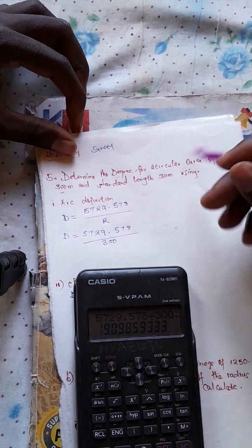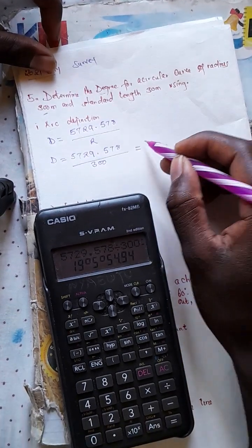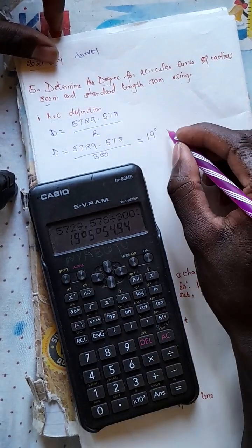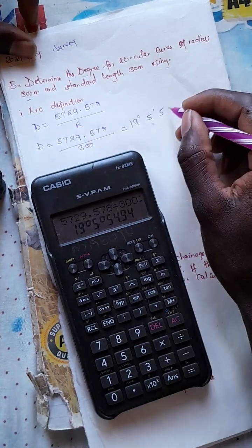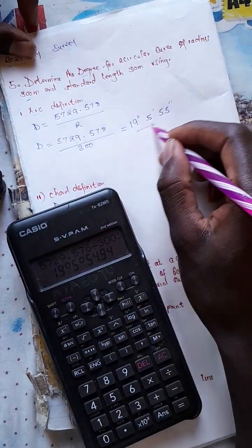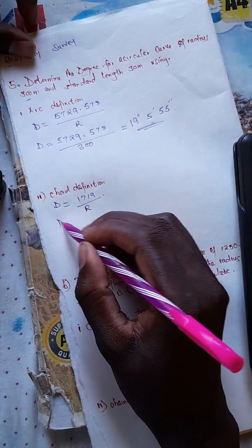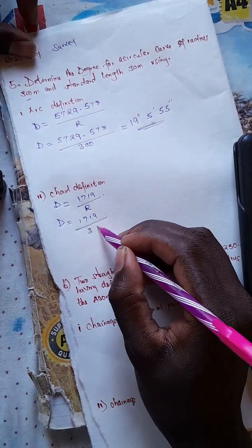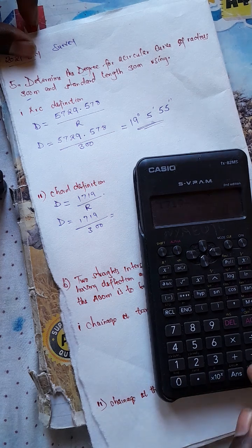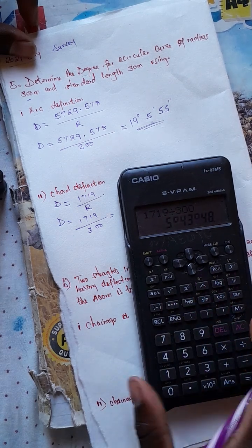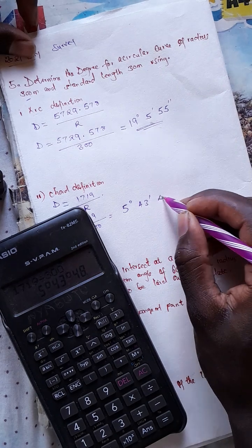The answer must be in degrees. By arc definition, we get 19 degrees 5 minutes 54 or 55 seconds. Then by chord definition: 1719 divided by 300. Put that in your calculator and you get 5 degrees 43 minutes 48 seconds.